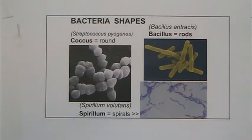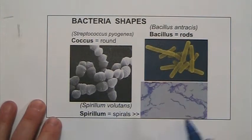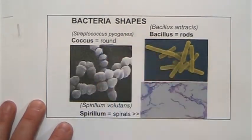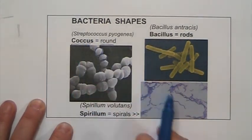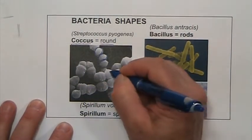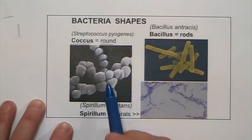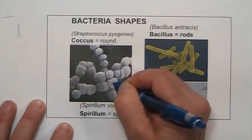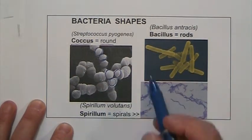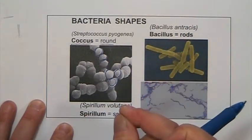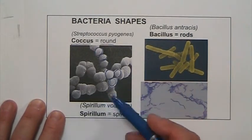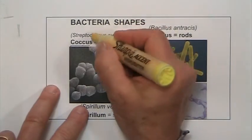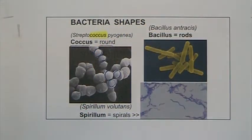Bacteria come in three shapes with specific names. Some are round — this shape is called coccus (think of a coconut). Bacteria like to stick together, so you'll see them in clusters, but each is still an independent cell. An example is Streptococcus pyogenes, which causes strep throat — notice the name tells you the shape.